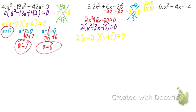Wait — how many things do we have multiplying? Three. But what's our highest power? Two. So let's set up the equations. Does 2 equal zero? No — will that ever be true? No. So we rule that out and it's not going to be an answer. So how many answers are we going to end up with? Two — we're back to normal.